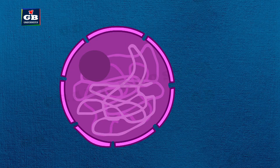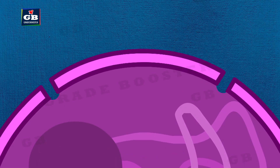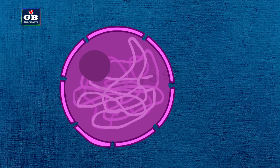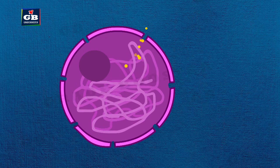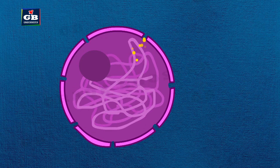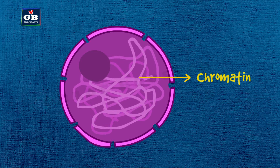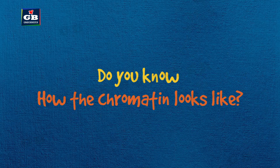Now let us look at the structure of the nucleus. The nucleus is covered by a nuclear membrane. This nuclear membrane has two layers. The nuclear membrane also has pores, and materials enter and exit the nucleus through these pores. The nucleus also contains chromatin.